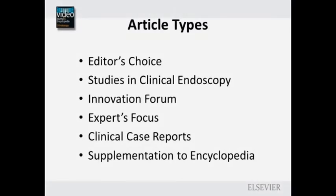Video Journal of GI Endoscopy is published on a quarterly basis. There are six article types in the journal publication: editor's choice, studies in clinical endoscopy, and innovation forum.